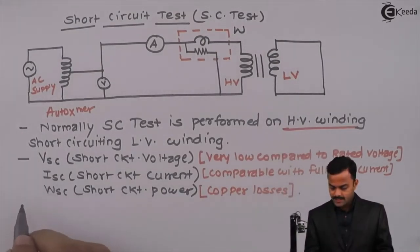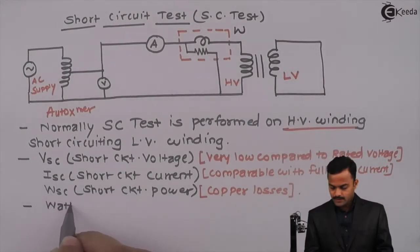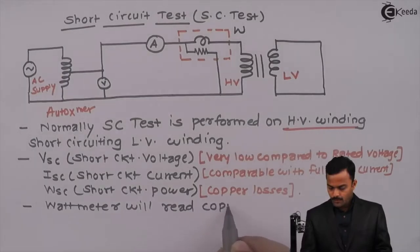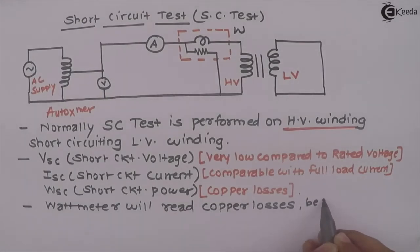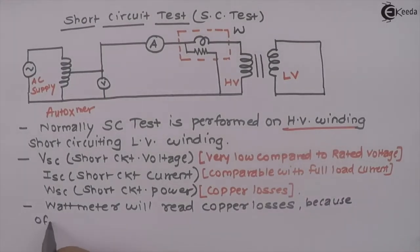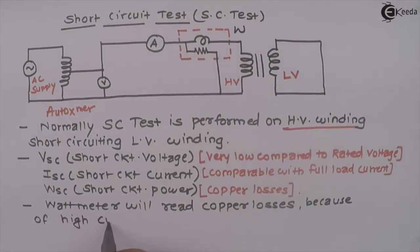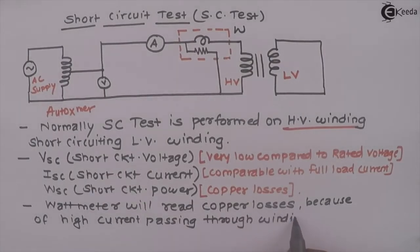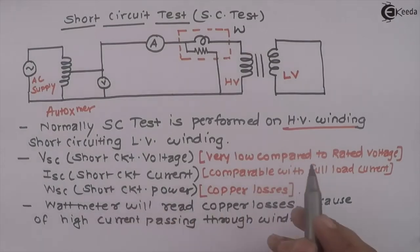To summarize: the wattmeter reads copper losses because of the high current passing through the winding, and voltage is very low, so core losses cannot be recorded.